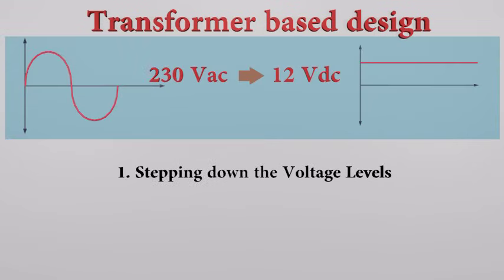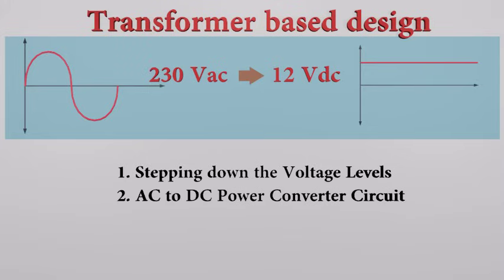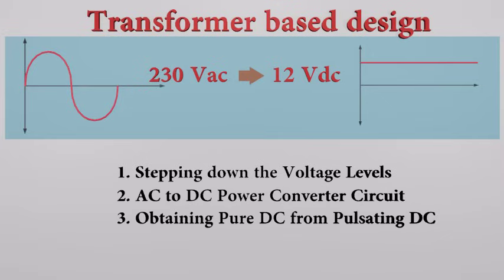1. Stepping down the voltage levels. 2. AC to DC power converter circuit. 3. Obtaining pure DC from pulsating DC. 4. Regulating DC voltage. Let's discuss one by one.